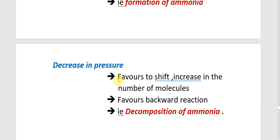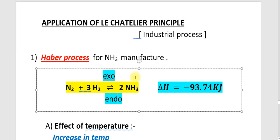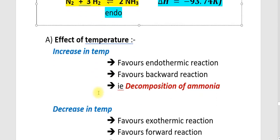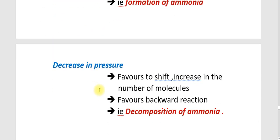Decrease in pressure favours the side with an increase in the number of molecules. Here, the reactants — N2 plus 3H2 — have more moles. So it favours the backward reaction, that is the decomposition of ammonia will take place.